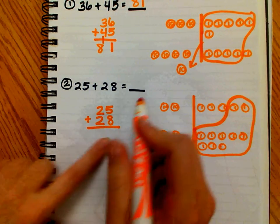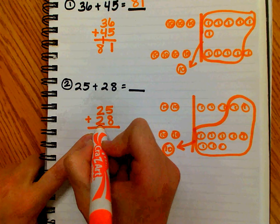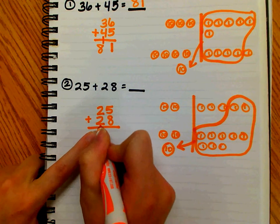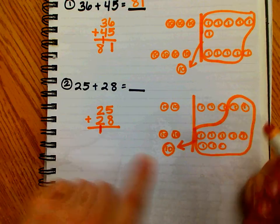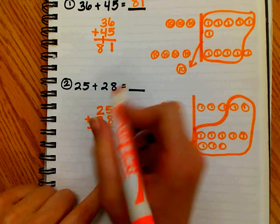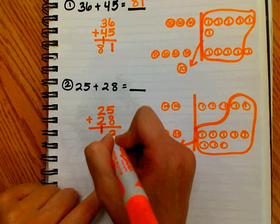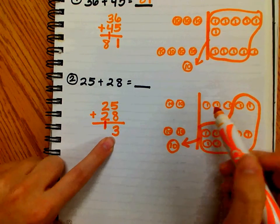I show this on the written form by doing my new groups below. I'm adding that one on the line below the tens place. So now I know I have three ones left. I write the total of ones below the ones place. And now I add how many tens I have.